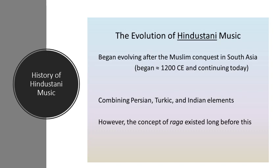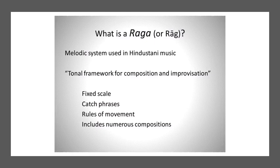Before we move on, I want to talk a bit about the music itself. There are a couple of terms we should understand. The first is raga. You've probably heard the term rag or raga. It's the overall system in which Indian music is performed — it's not a key. Raga is the melodic system used in Hindustani music. My shorthand is: a tonal framework for composition and improvisation. Ragas have fixed scales, catchphrases, rules of movement, and many compositions remembered by performers.